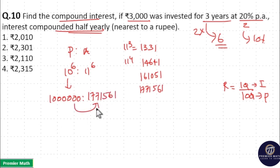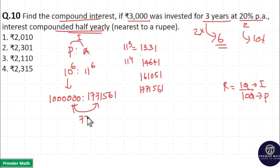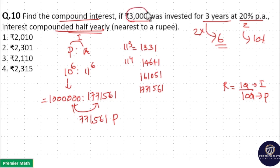The difference between the amount and principal is the interest generated. Here the interest generator is equal to 1771561 minus 1000000, which gives 771561 parts.